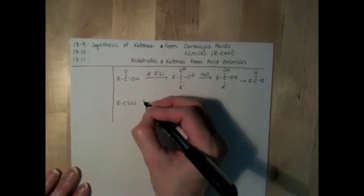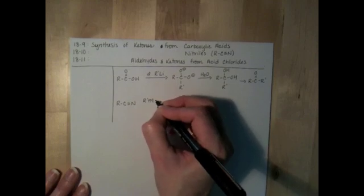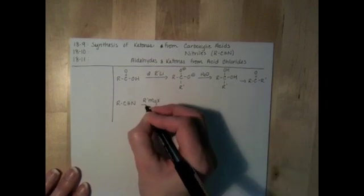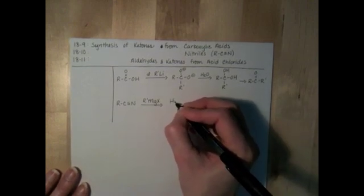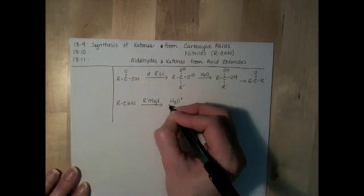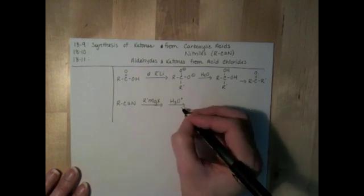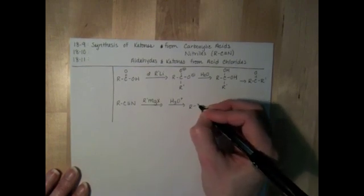This is a Grignard reaction. Two steps. First, we add the Grignard, and the second step, we're going to add some dilute acid, or you could use water instead if you wanted to. And bottom line, you just make a ketone.